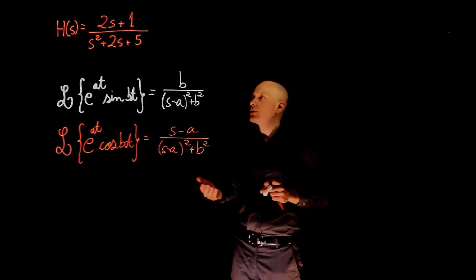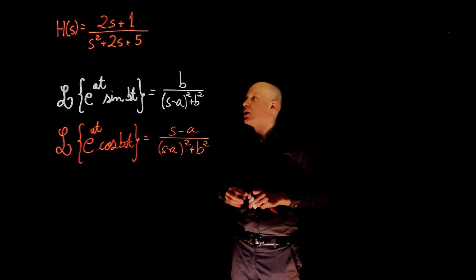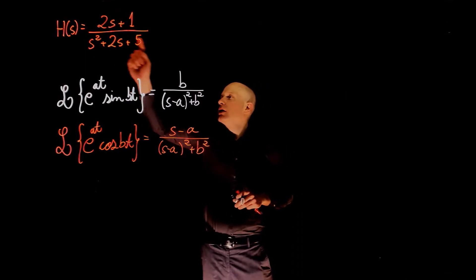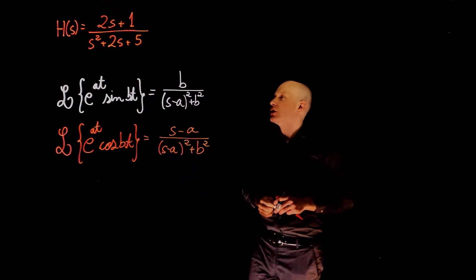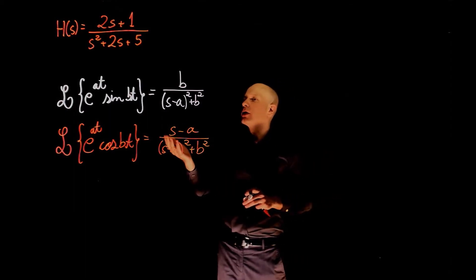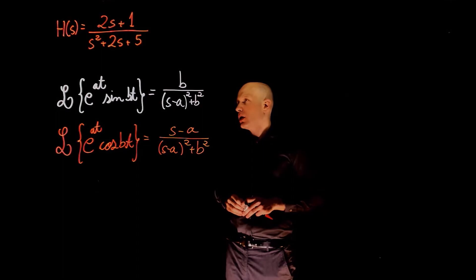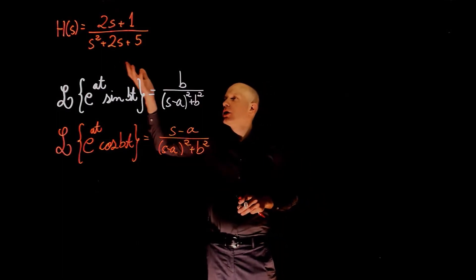If you're interested in the time response of h of s, we now have to take the inverse Laplace of this function. Knowing that the damping ratio is less than 1, and the poles here are complex conjugate numbers, there is no further simplification that can be applied to the denominator in order to do partial fraction expansion.